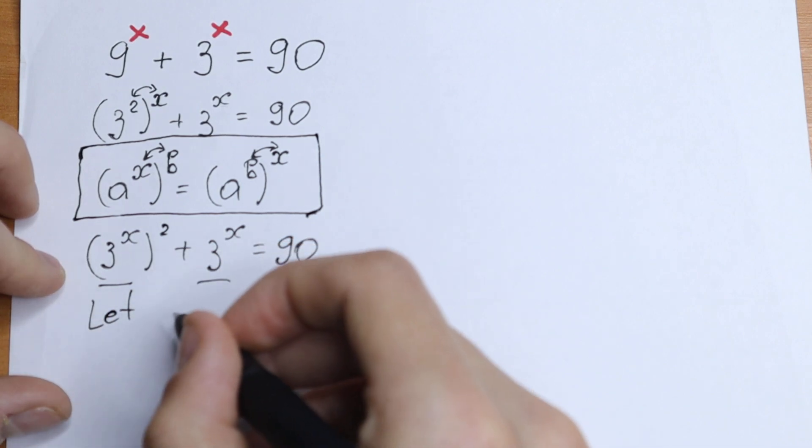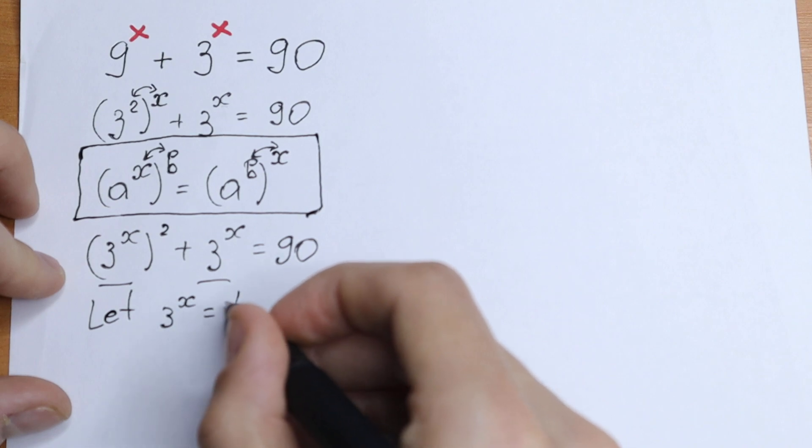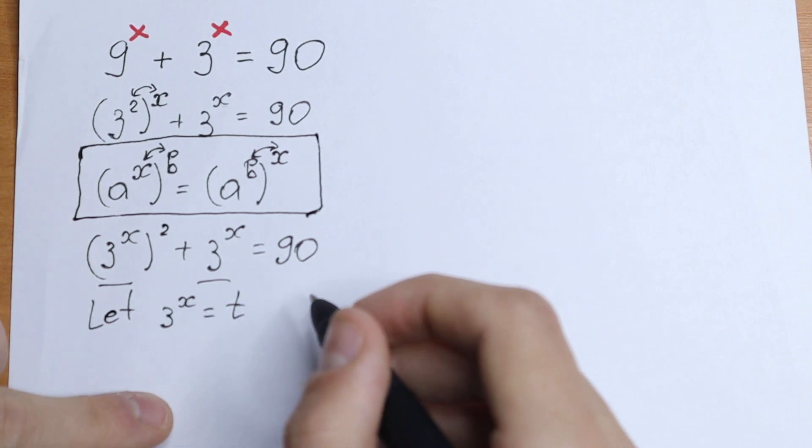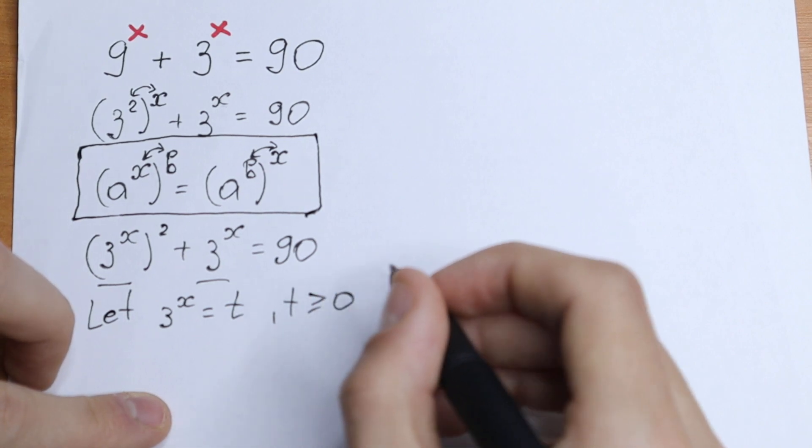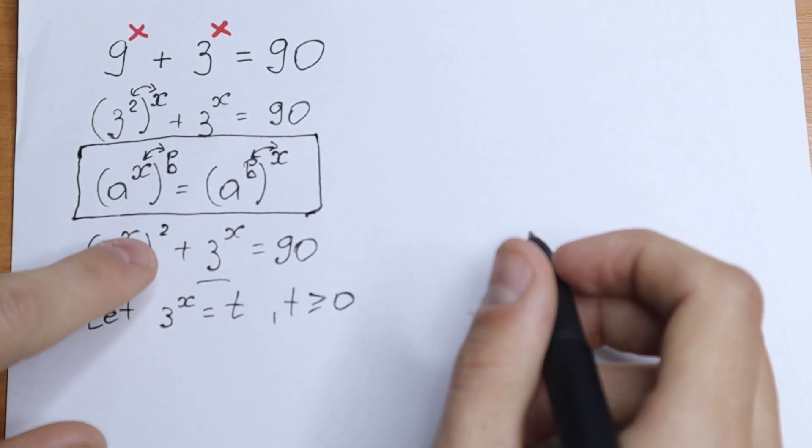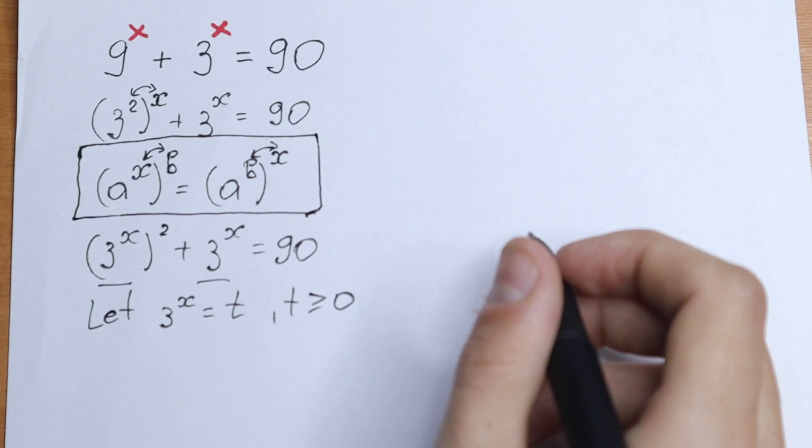So we can let a substitution. Let this 3 to the power x will be equal to, for example, our t. And moreover, t needs to be greater than or equal to 0 because we are talking about the second power. Okay, what we're going to do next?